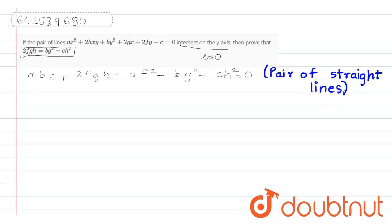From the given equation, we are going to put x equals 0 because we are saying that it intersects on the y-axis. Where are we going to put x equals 0? We are going to put x equals 0 in the above equation.